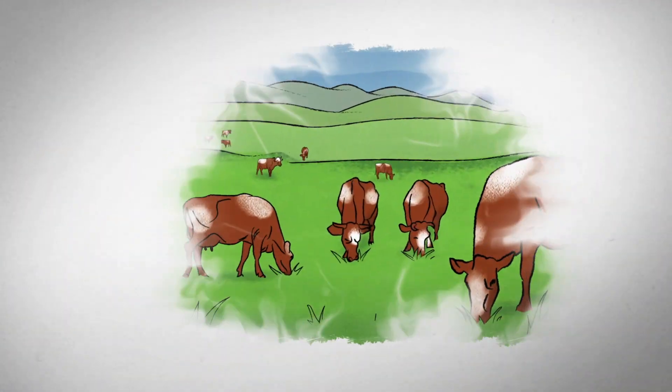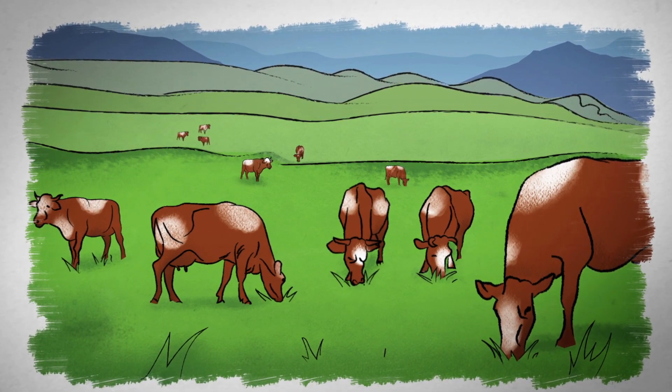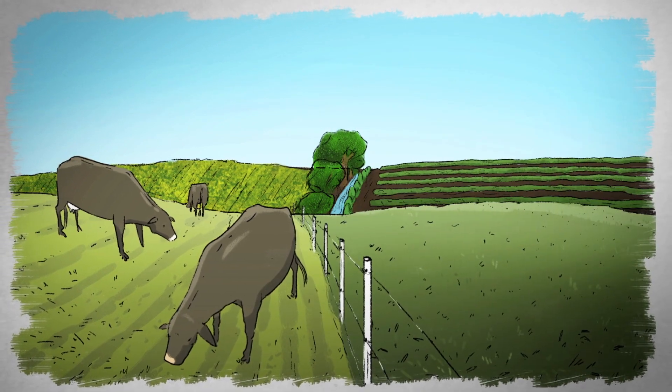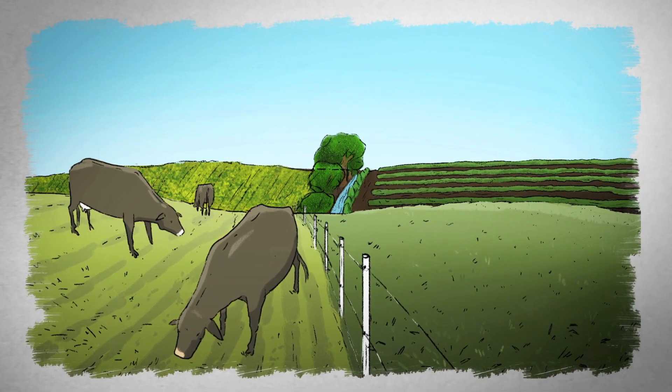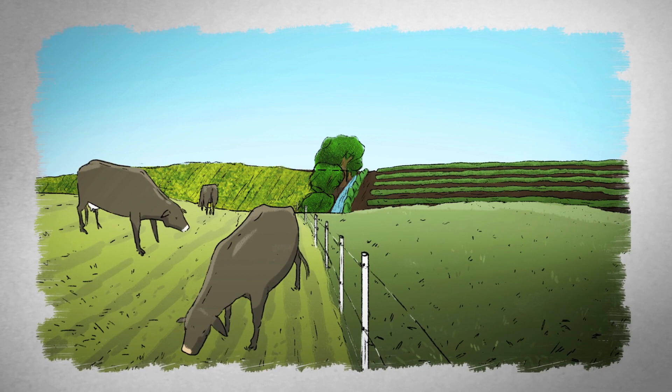Farms and ranches that raise ruminant livestock come in all shapes and sizes. From arid rangelands to irrigated pastures, we raise cattle, sheep, and goats for meat, dairy products, and fiber.